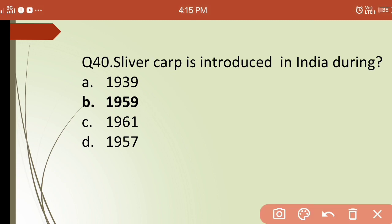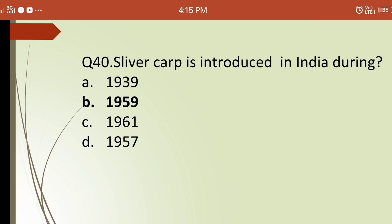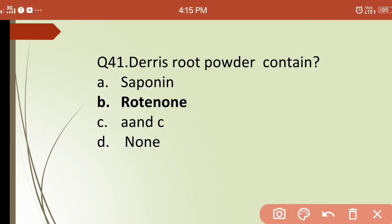Fortieth question: silver carp was introduced in India during which year? Options are: (a) 1999, (b) 1959, (c) 1961, (d) 1957. The correct answer is (b) — silver carp was introduced in India in 1959.